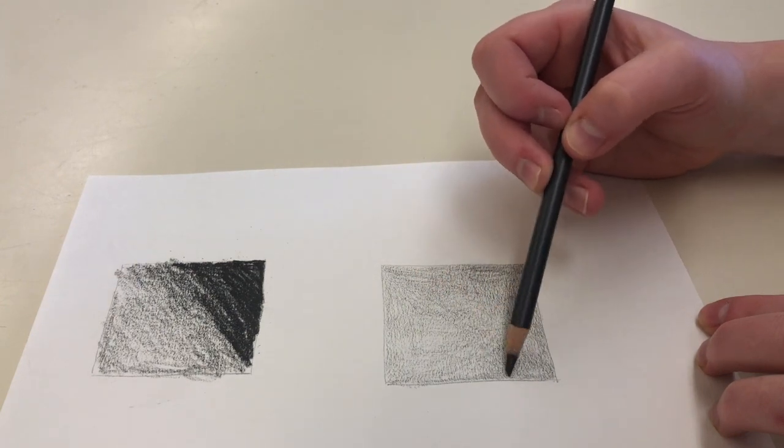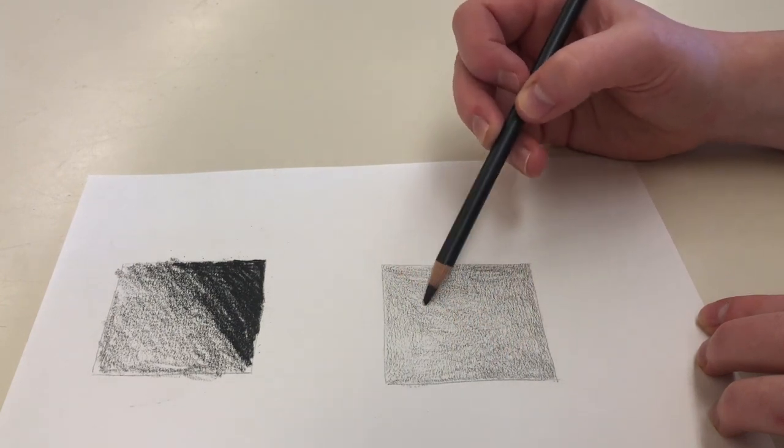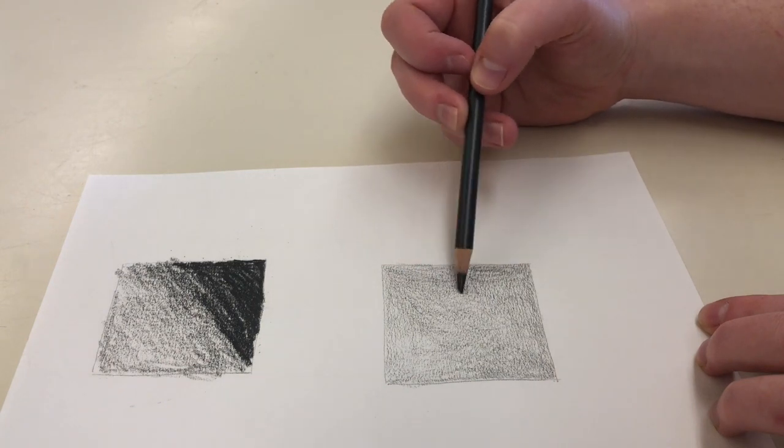Notice that it's easier to make a smooth transition from dark to light when I add a light layer over the entire thing and then I build that value.